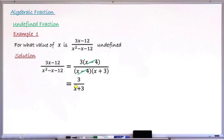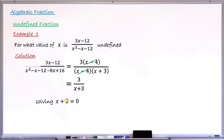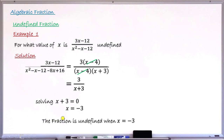Step two: look at the denominator of the simplified form, which is (x plus 3). Set that polynomial equal to zero: x plus 3 equals zero. Solving this equation — that is step three — we take positive 3 to the right-hand side to get x equals minus 3. This is the value that makes the fraction undefined. Therefore, the fraction is undefined when x equals minus 3.